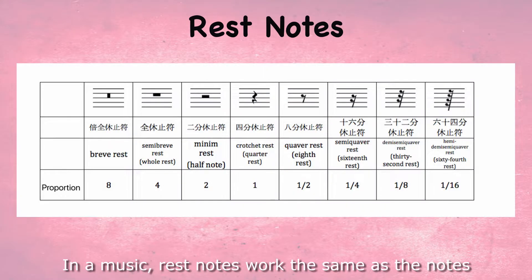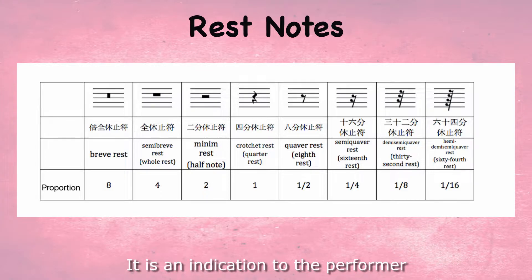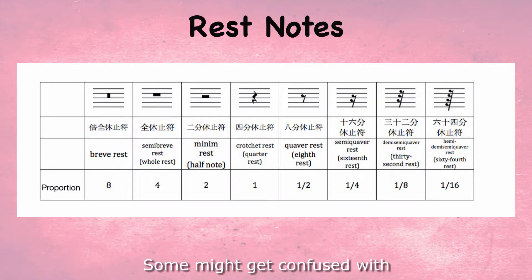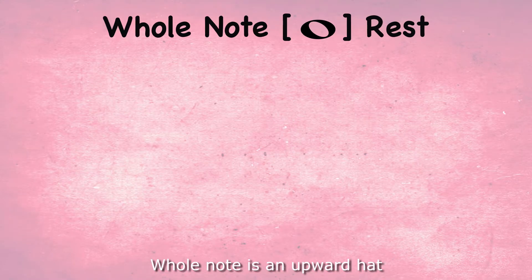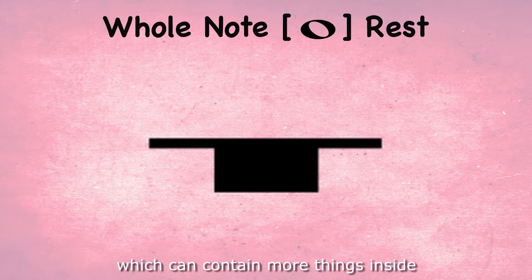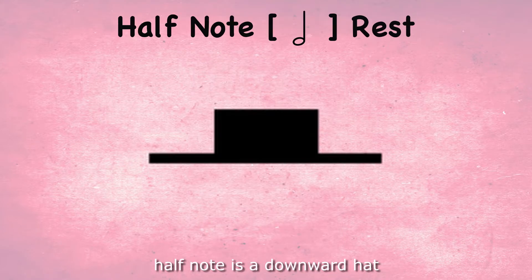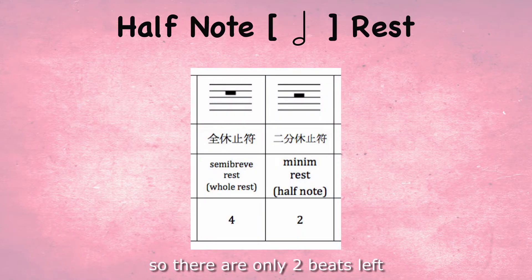In music, rest notes work the same as regular notes, just with a different symbol as shown in the table. It's an indication to the performer to not play anything for that note value. Some might get confused with whole note rest and half note rest. Think about this: the whole note rest is an upward hat, which can contain more things inside, so it's a higher number — 4 beats. The half note rest is a downward hat, since things fall out of it, so there are only 2 beats left.